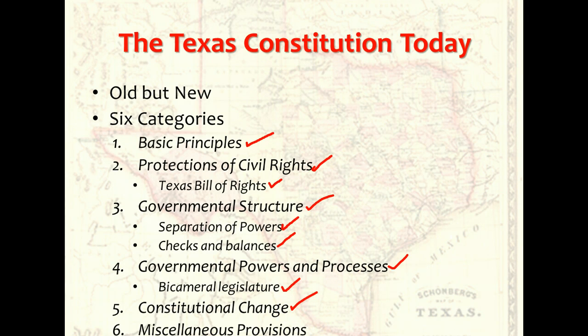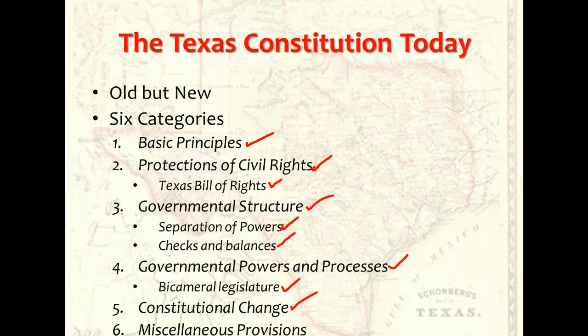Constitutional change. Like the national constitution, the state constitutions have been altered over the years by both the formal and informal amendment processes. But state constitutions tend to be more detailed and specific, so there generally is much less room for informal change. As a result, constitutional development at the state level has come about primarily through formal rather than informal change.